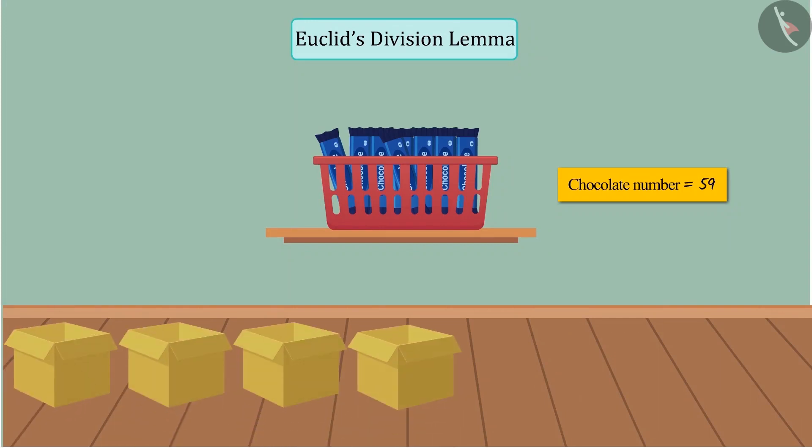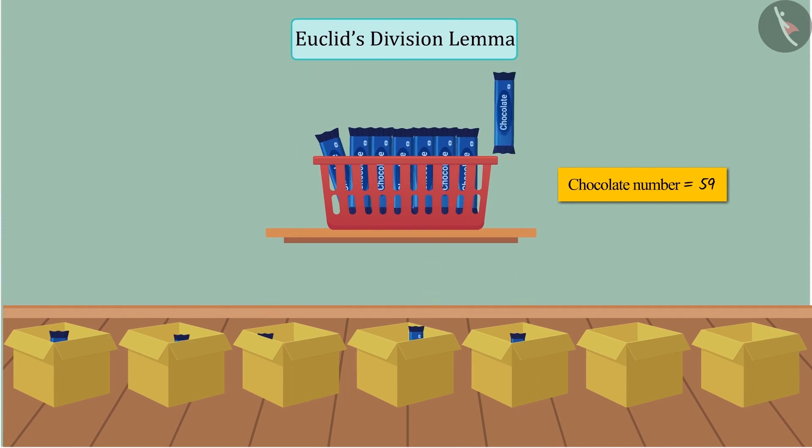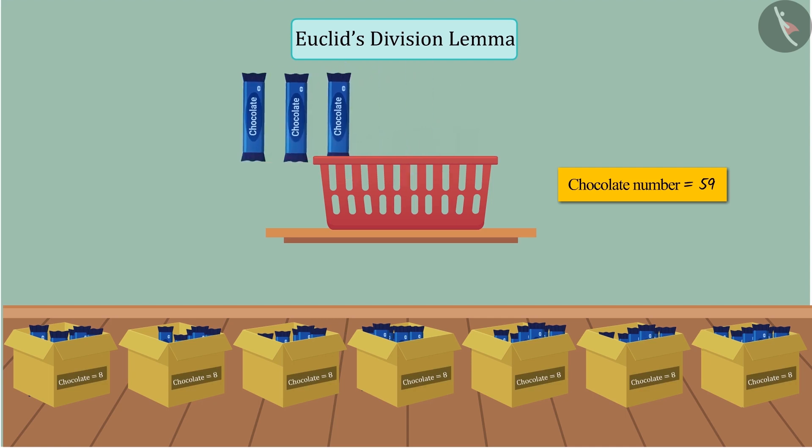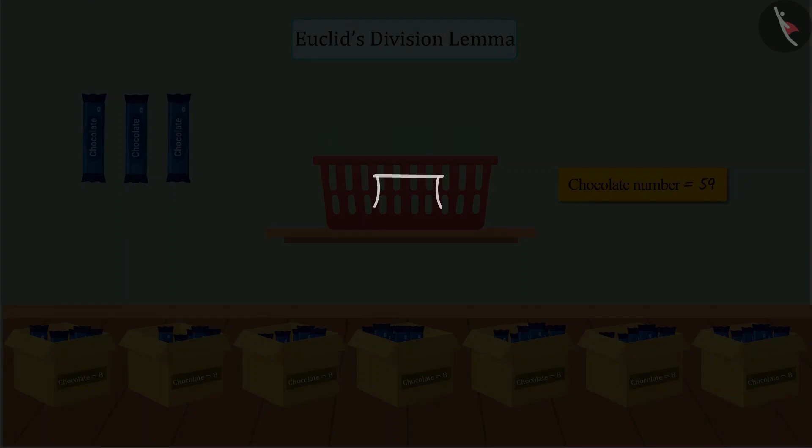Similarly, if the number of boxes is increased to 7, we see that each box contains 8 chocolates, while 3 chocolates remain, which we represent like this.